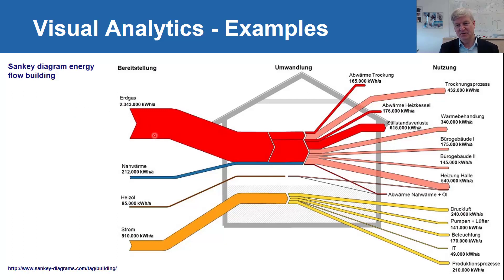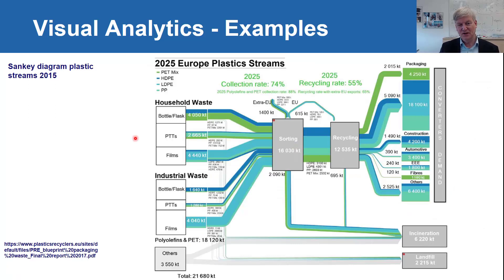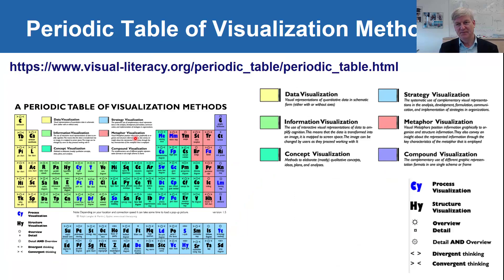Other examples of Sankey diagrams include one showing how energy goes into a building and how it leaves, and another showing the flow of plastic streams. This is indicating that there are many possible visualizations. Just as there is a periodic table of elements, there is a periodic table for visualization techniques.